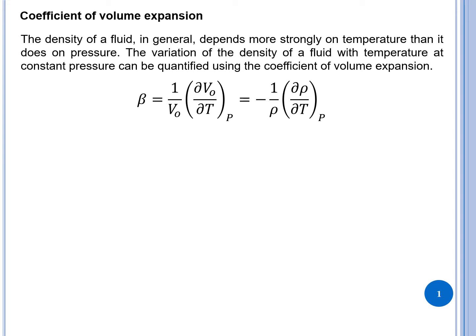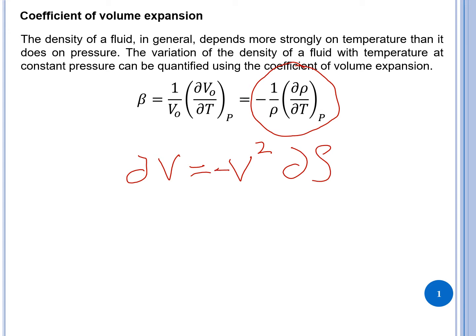Beta is defined as 1 over v-naught times dv over dT at constant pressure. This expression can also be written in terms of density as negative 1 over rho times d-rho over dT at constant pressure. We have already found that dv equals negative v-squared times d-rho, and when we substitute this expression we get that result.